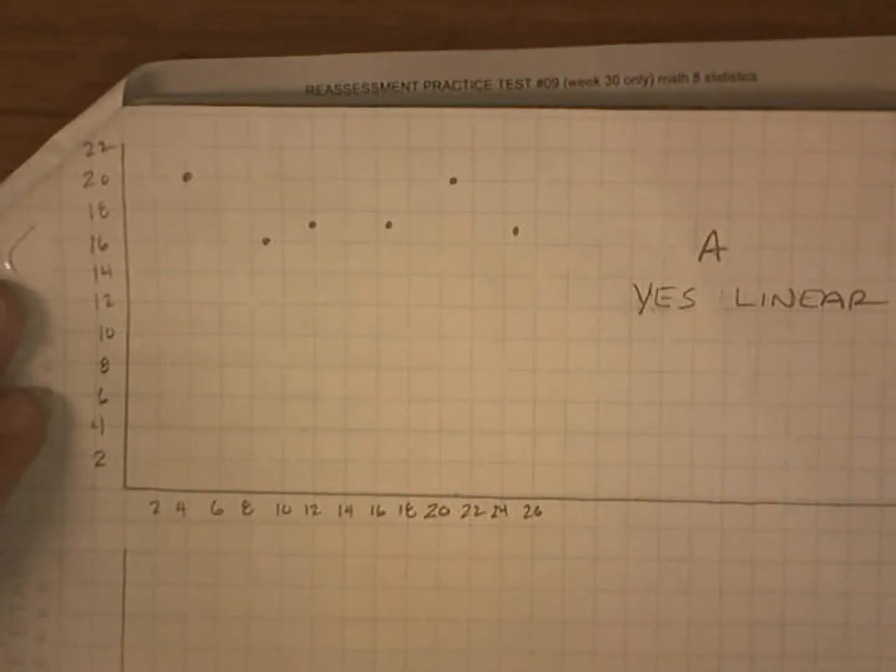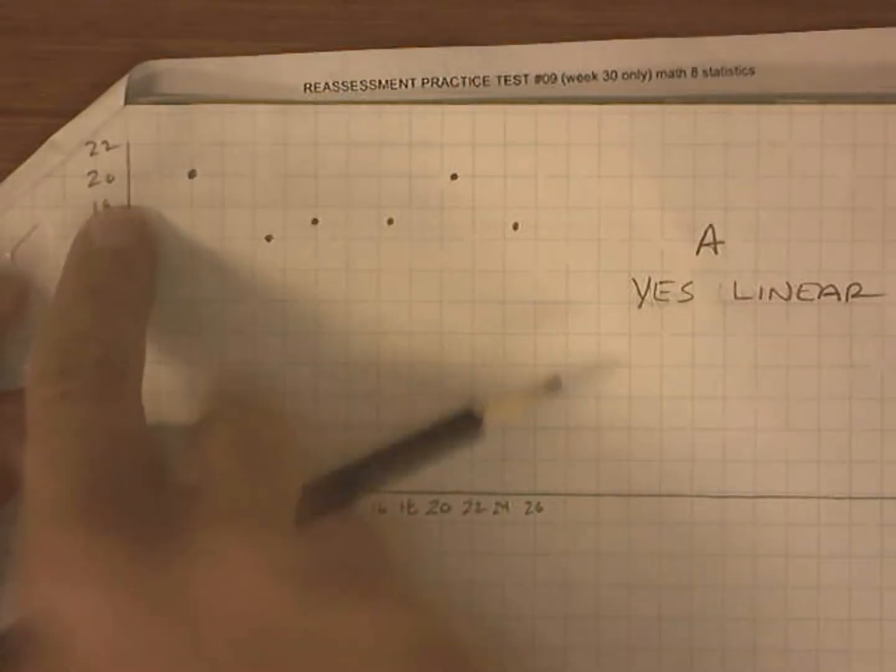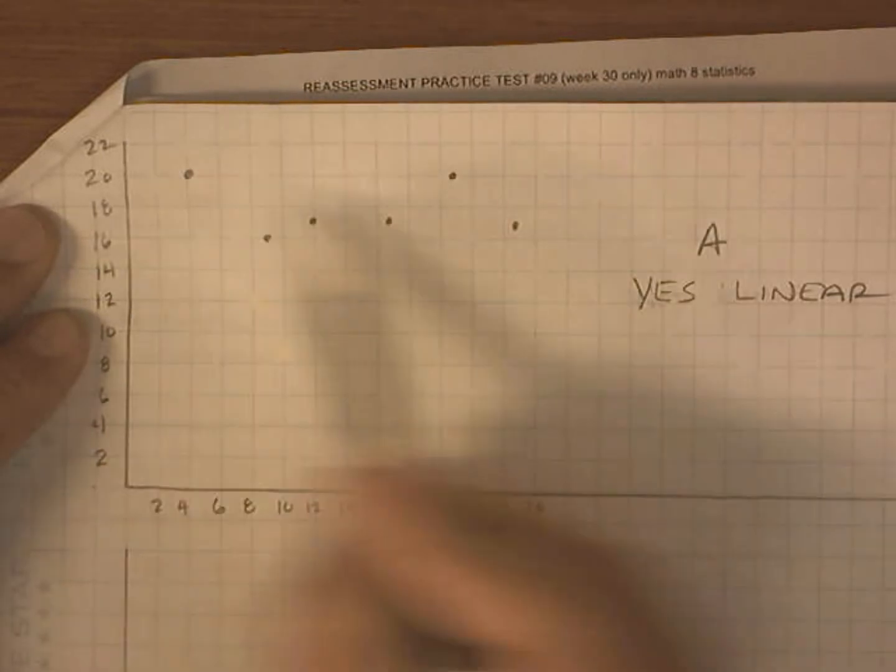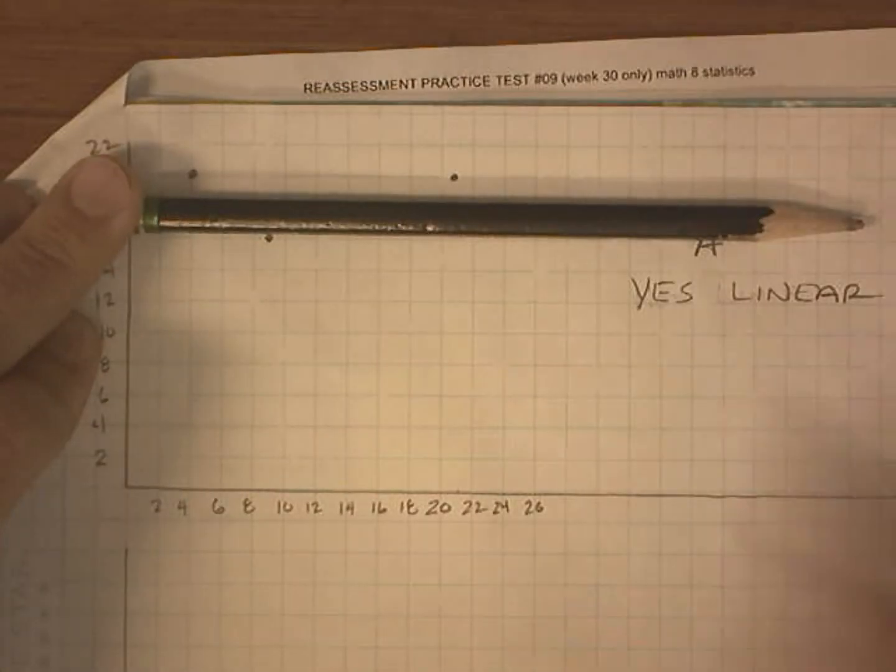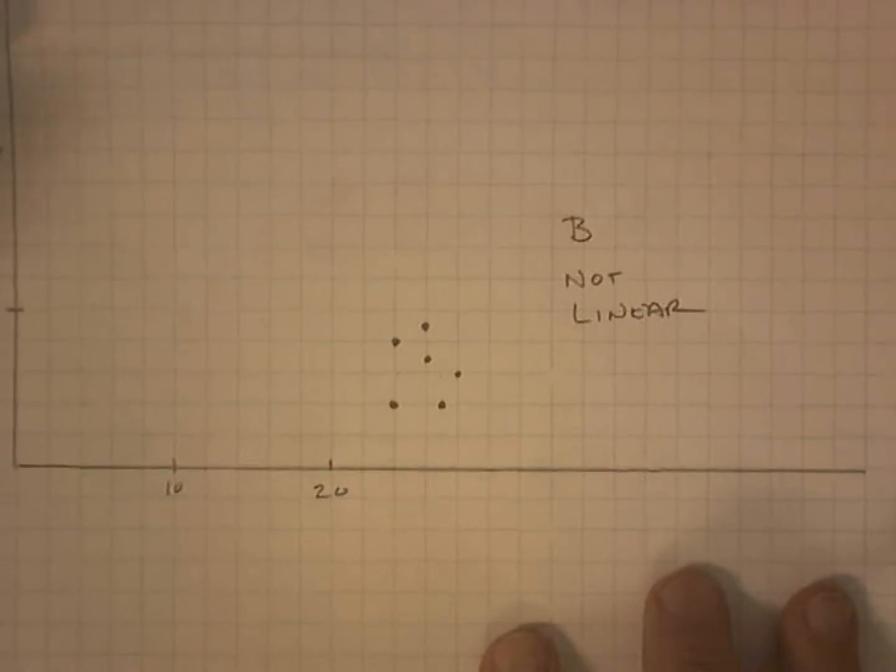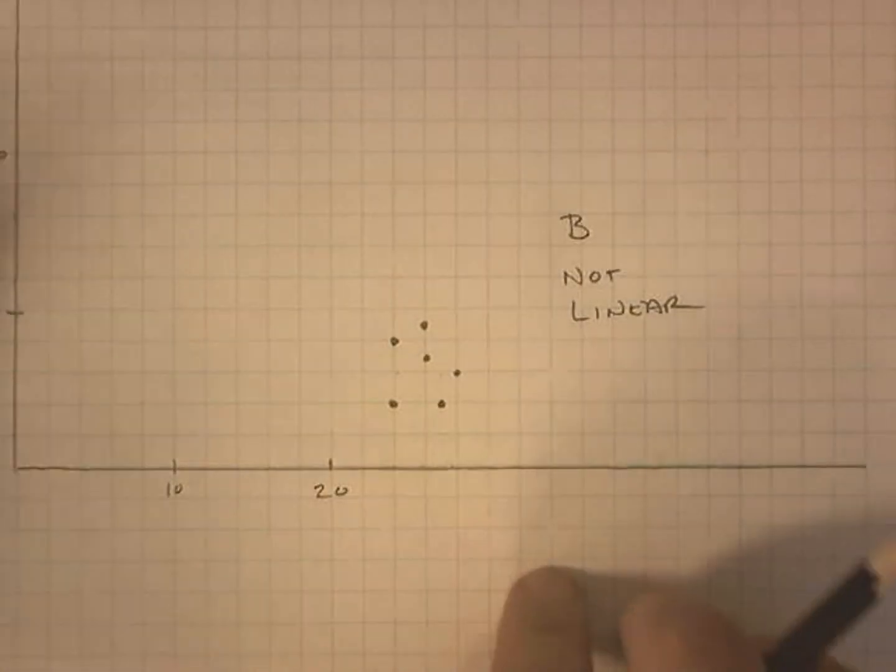So here's the graph of A. I actually went up by twos here and up by twos. And you can see it makes a line like this. It's not perfect, but it's got a trend that would be going like this. And if you look at this, this isn't doing much of anything. That is not linear at all.